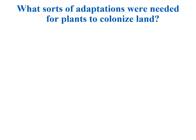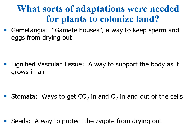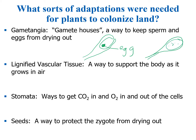We're starting back up again on this idea of what sorts of adaptations were needed for plants to colonize land. Here is a brief list. Gametangia means 'gamete houses' — these are ways that sperm and eggs could be protected from drying out. When you look at the top of a moss, if it's a female plant, it'll have a little vase-like structure at the top that's almost closed in, with a little egg inside. A male moss will have a similar tip with a sack that is full of sperm.